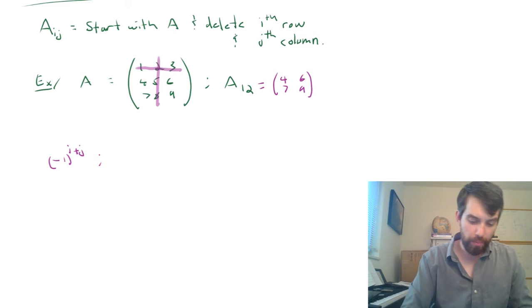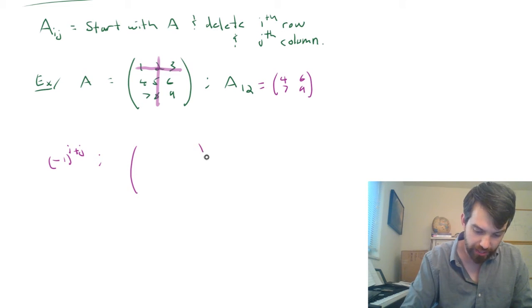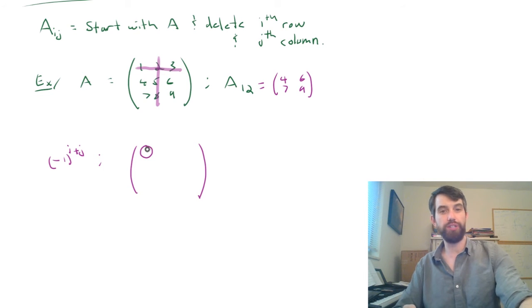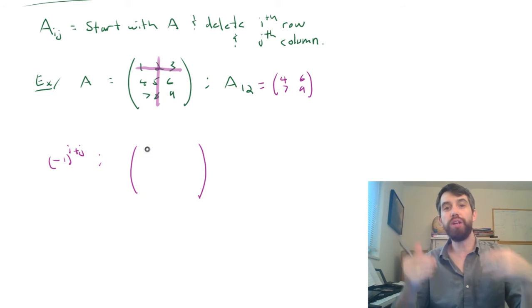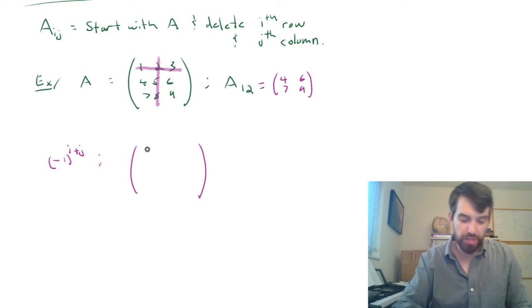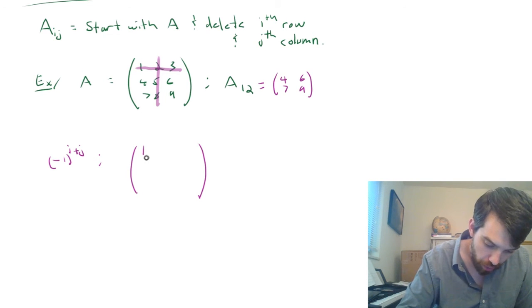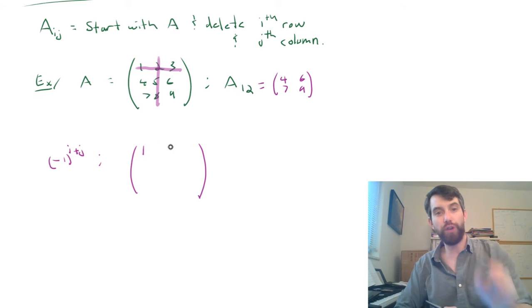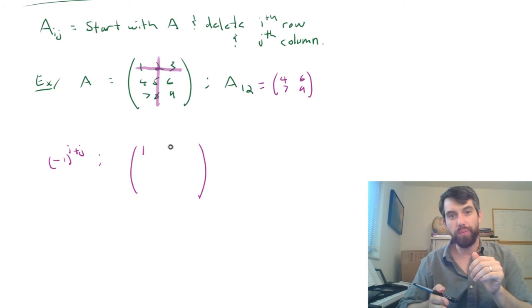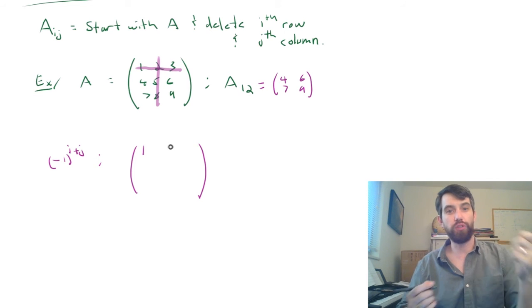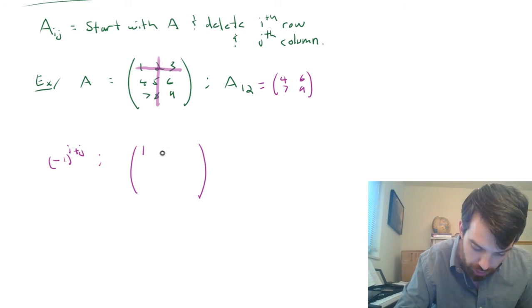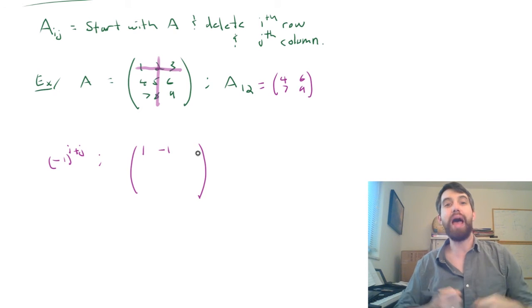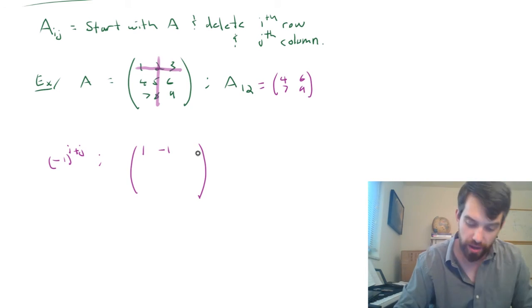I'm going to give a pictorial representation of this in the 3x3 case as well. If I think about this first location I have here, that is i equal to 1 and j equal to 1, so it's minus 1 to the 1 plus 1, which is going to be minus 1 squared, or just 1. If I then look in the next location here, this is the first row, second column, so 1 plus 2 is 3 and minus 1 cubed, that's just going to be equal to minus 1. And then finally, first row, third column, now I'm up to an even power of minus 1, so I'm up to 1.